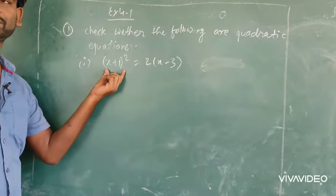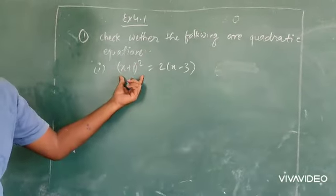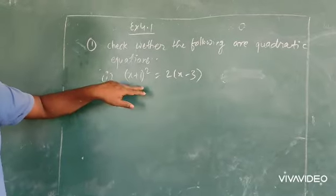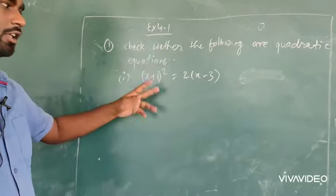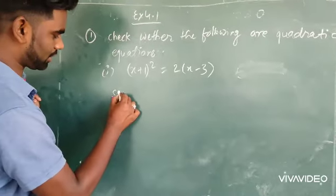First of all, we will simplify the equation. We will check the degree. If it is degree 2, it will be quadratic equation. If it is not, then it will not be quadratic equation. So, let's start the solution.